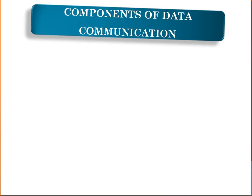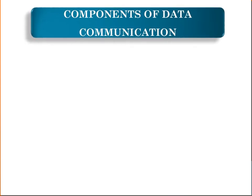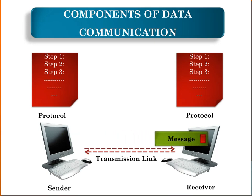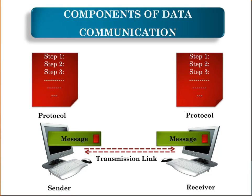Now let's study the different components of data communication. There are five components associated with data communication. They are: Message, which is the data to be communicated; Sender, which is the device that sends the data message; Receiver, which is the device that receives the message; Transmission medium, which is the physical link by which a message travels; and Protocols, which are the set of rules that govern data communication.